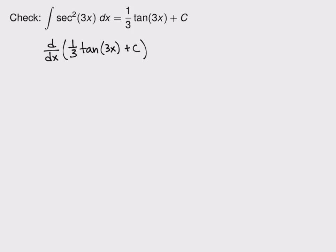Well, this is the chain rule problem. 3x is on the inside. And so this is equal to 1 third, and I'll do the derivative of the outside, that's secant squared 3x, times the derivative of the inside, that's the derivative of 3x with respect to x. And the constant just becomes 0.